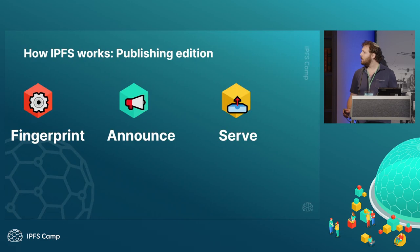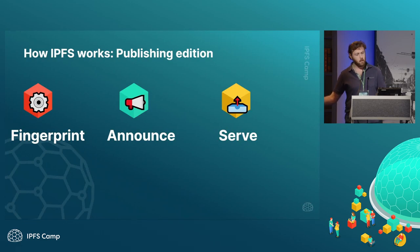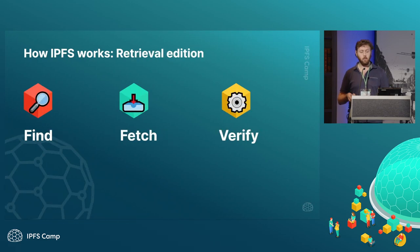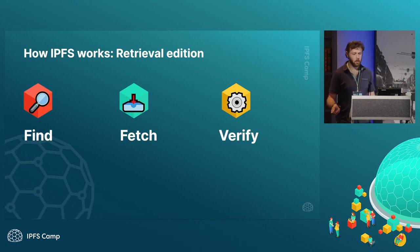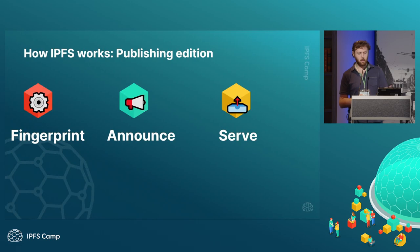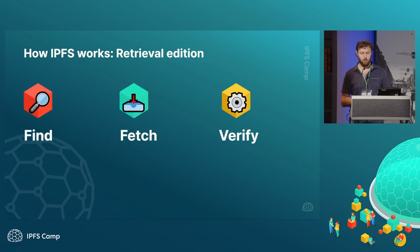On the publishing side: anytime you've got some data, you take that data, fingerprint it, tell people that you have it, and then when people come asking for it, you serve it to them — you give them bytes. On the retrieval side, you're looking for stuff — you ask who has this fingerprint that I am looking for, you fetch the data from them, and then you verify that fingerprint and make sure it was correct. These two things are the exact inverses of each other: tell people we have stuff and compute the fingerprints, then get the data and check it was right.